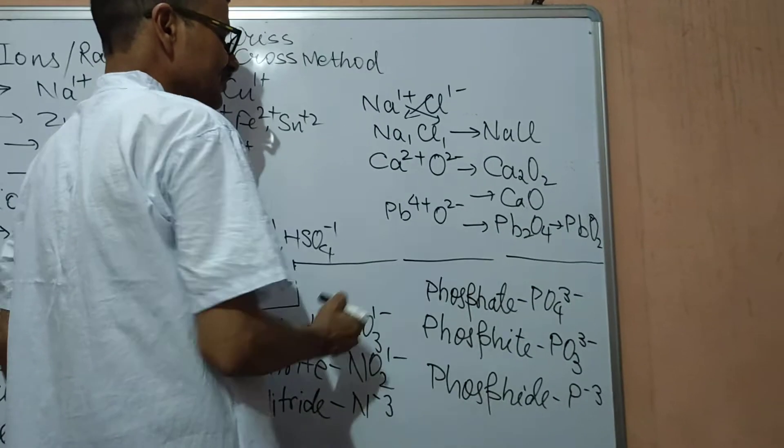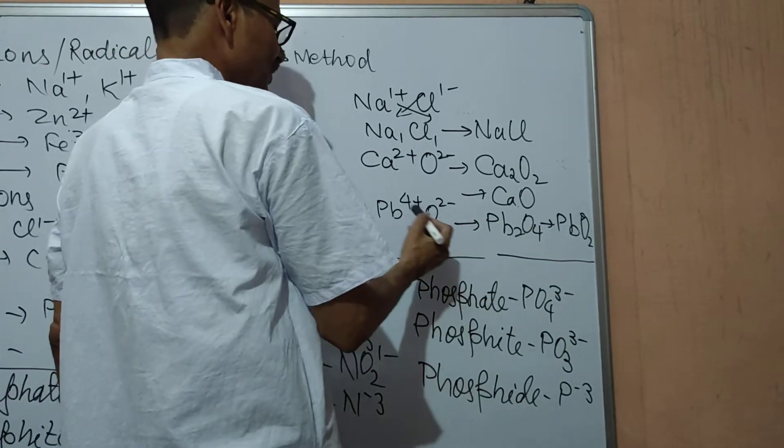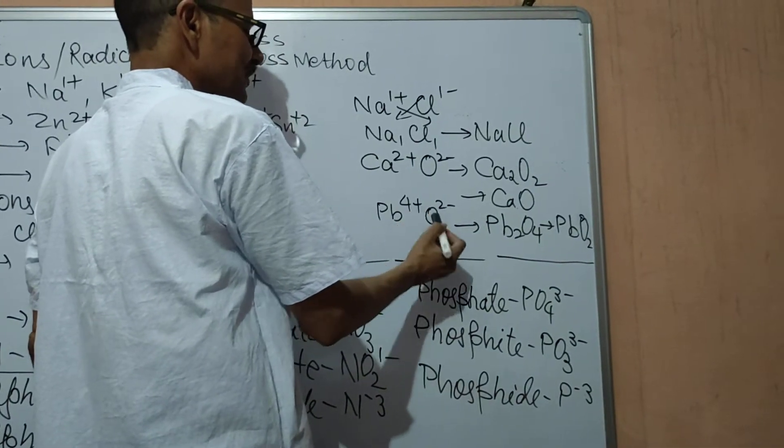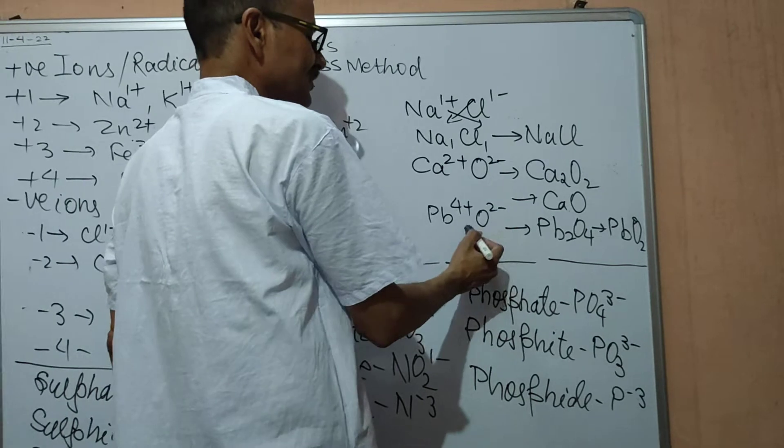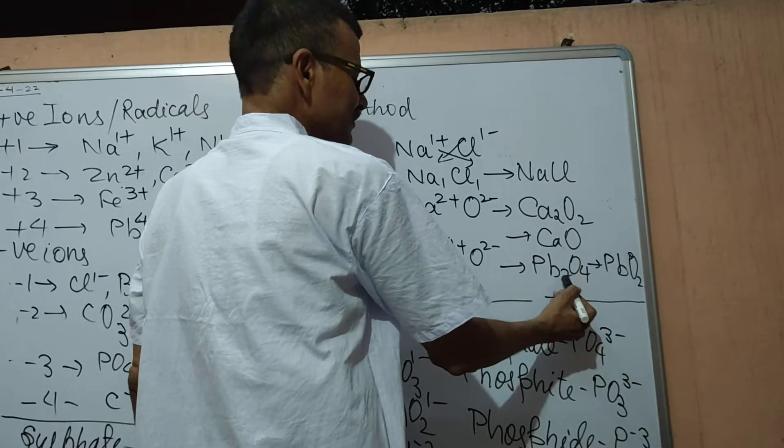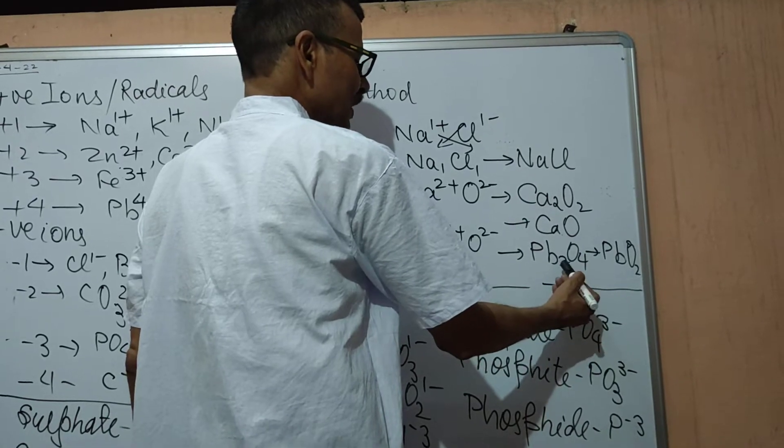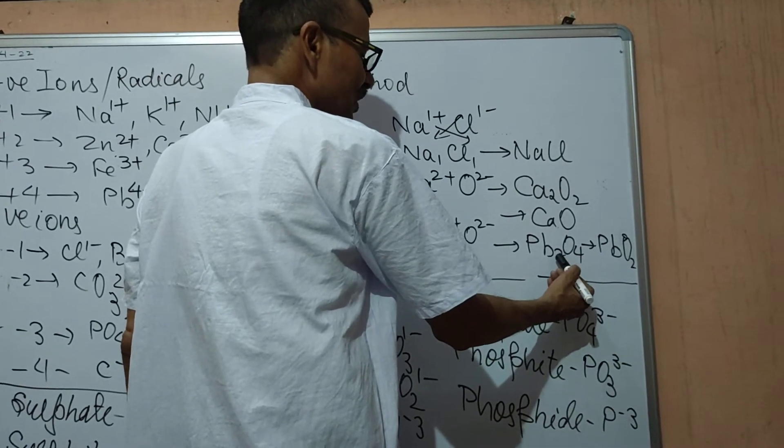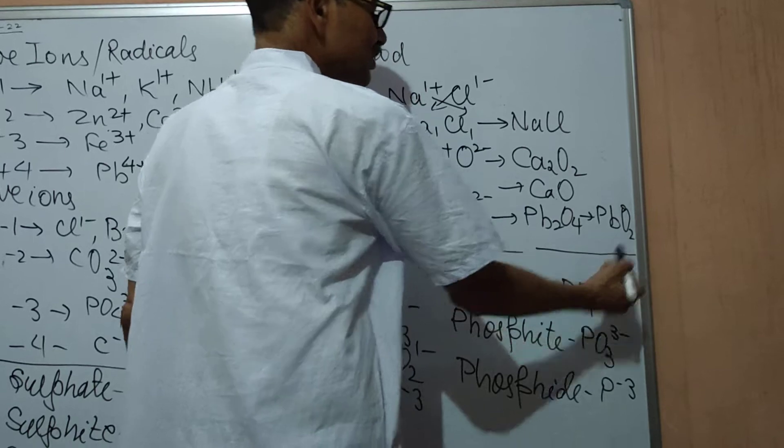Similarly, lead 4 oxide, where the valency of lead is 4+, oxide 2-. When we crisscross, we get Pb2O4. And we divide the overall formula by the HCF 2 and we get PbO2.